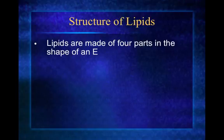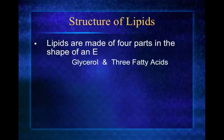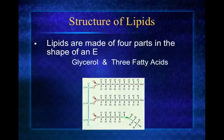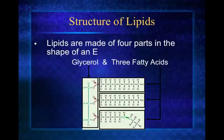Now we're going to talk about the structure of lipids. Lipids are basically made up of four parts and they always look like an E when put together, which is a nice way to remember it. The first part is called a glycerol, sometimes referred to as the glycerol backbone. The three fatty acid chains that attach form the arms of the E, and depending which fatty acid chains you have attached to the glycerol will determine what type of lipid you actually have.